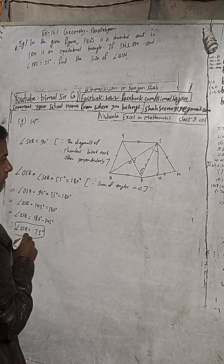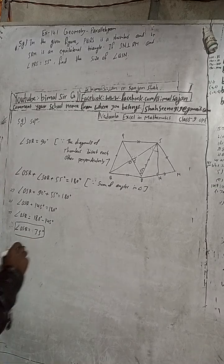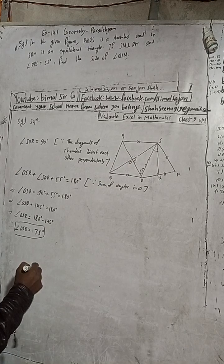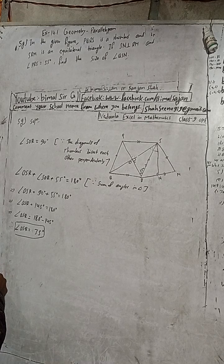Yes, this is 35 degrees. Now from this triangle, in triangle RSM, we move to find the next angle.